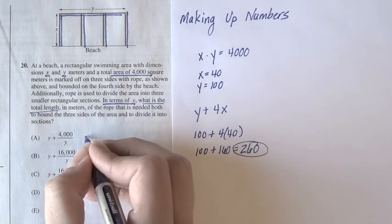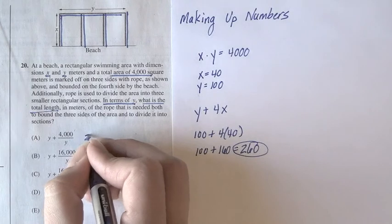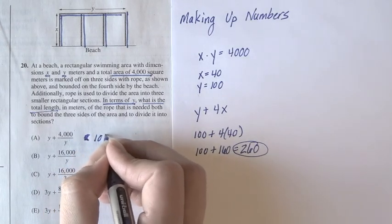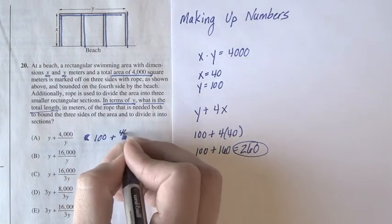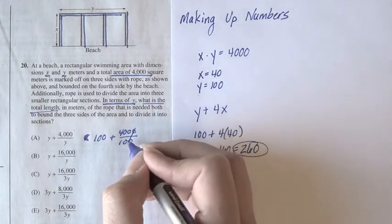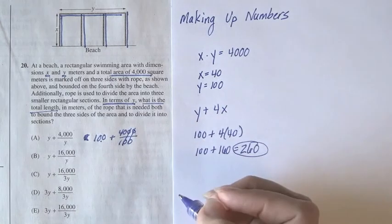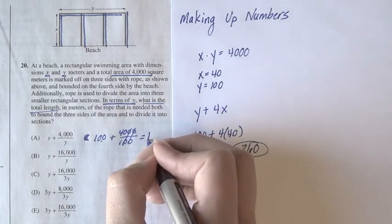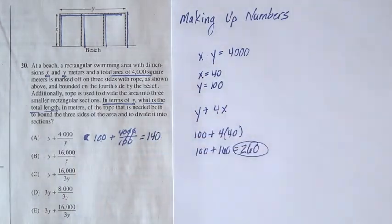So starting with A, we have y, which is 100 plus 4000 divided by y, which is still 100. These cross out, we have 100 plus 40, or 140, which is not the answer we want.